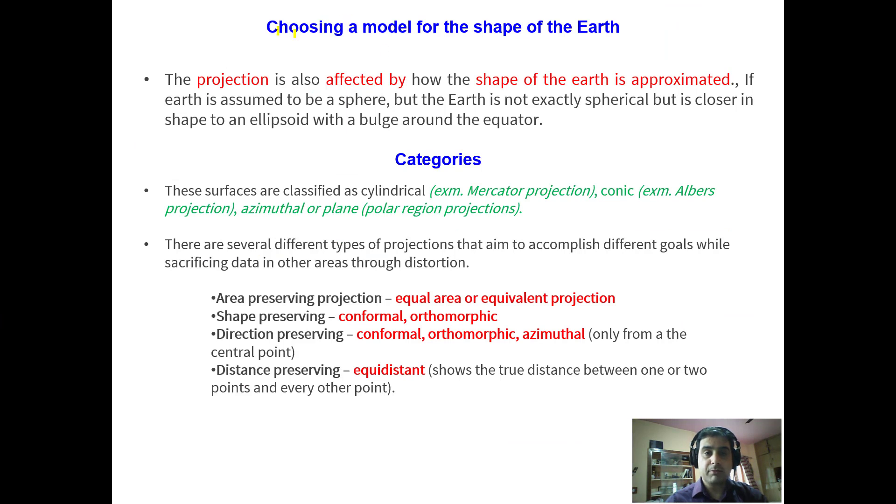Now choosing a model for the shape of the Earth, you have to approximate between sphere. If Earth is assumed to be a sphere, the Earth is not exactly spherical, but is closer in shape to an ellipsoid with a bulge around the equator.